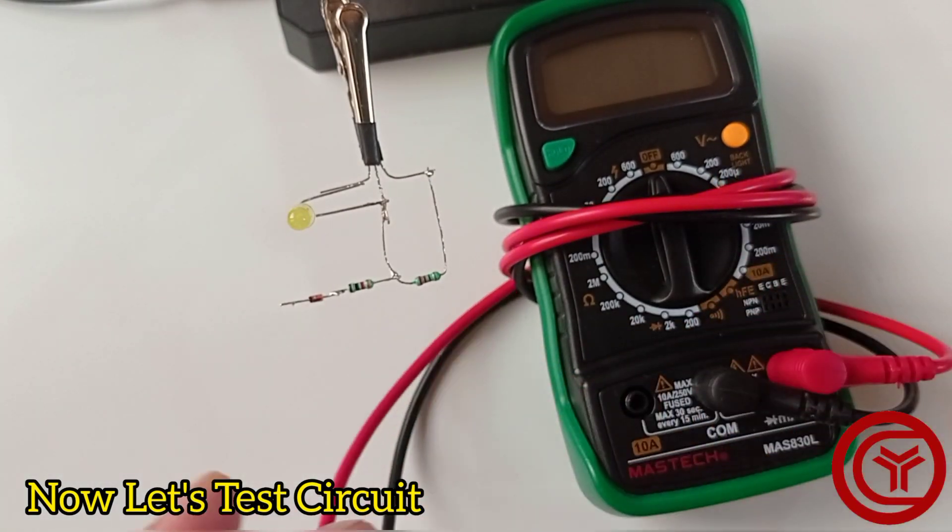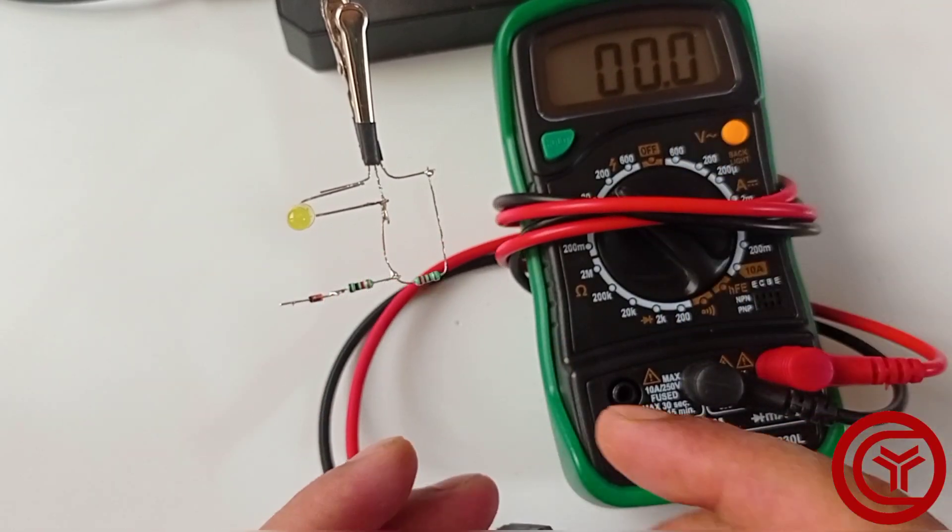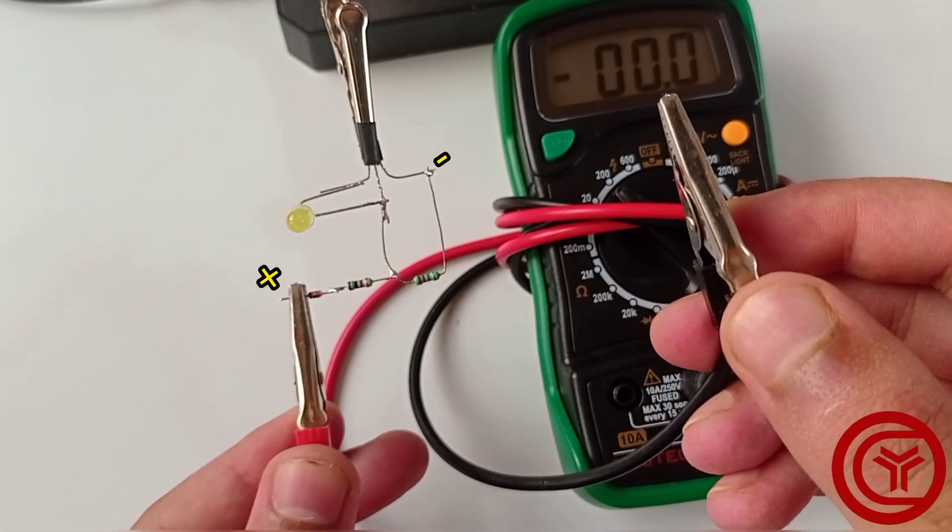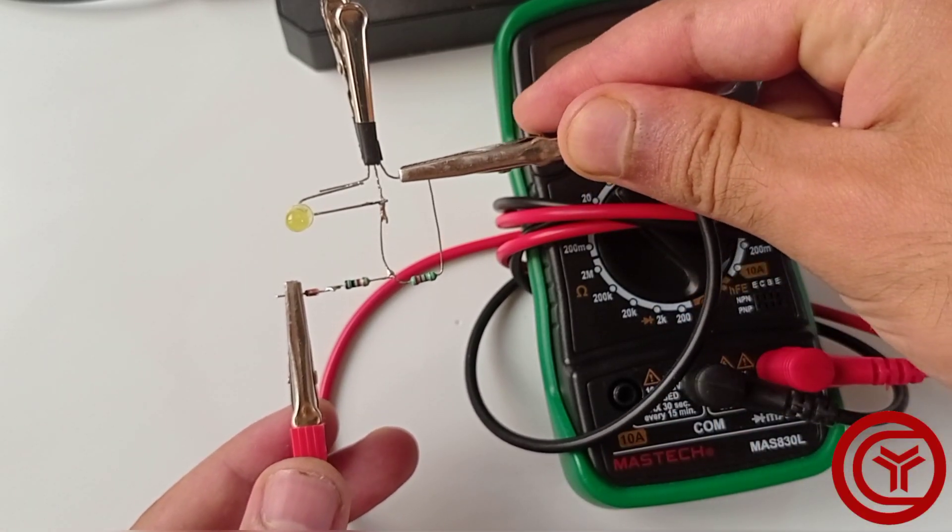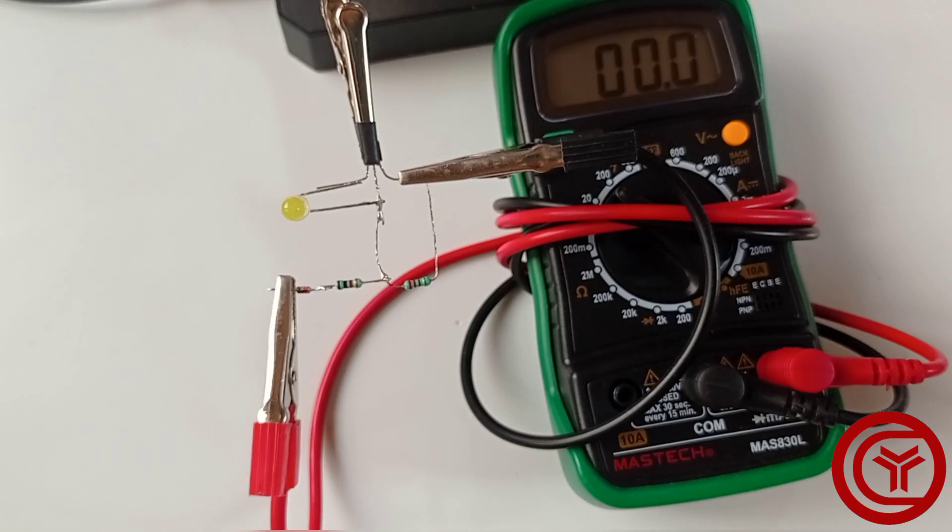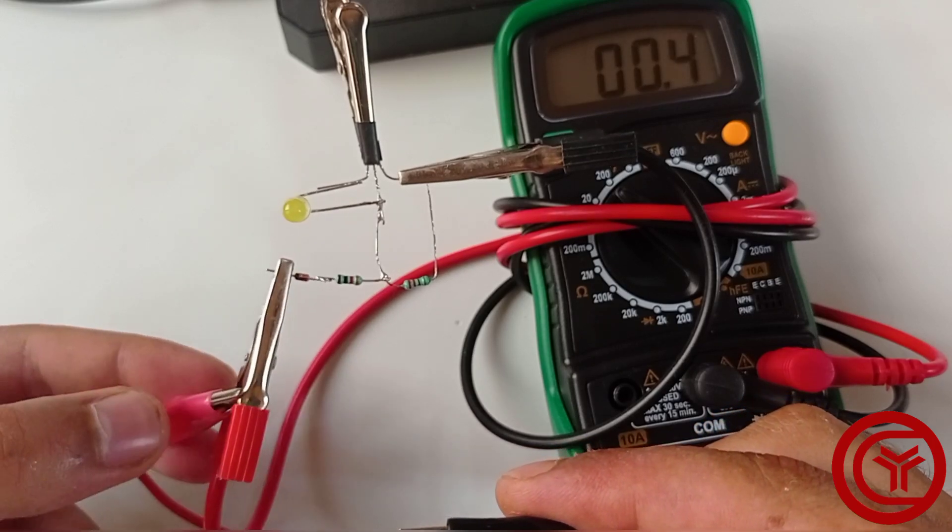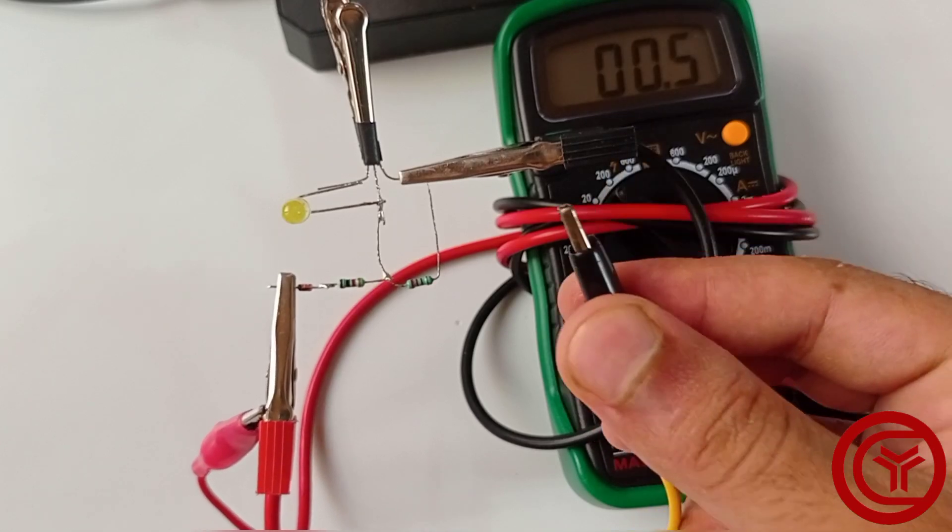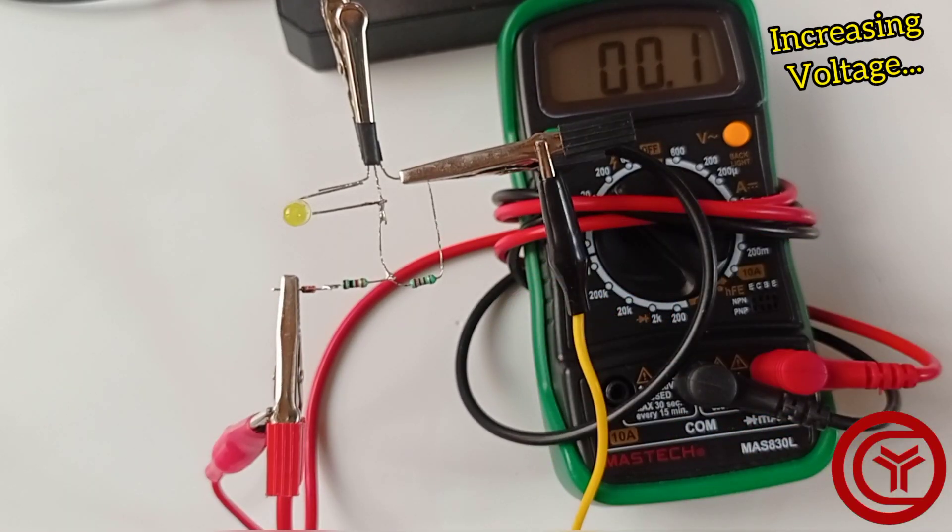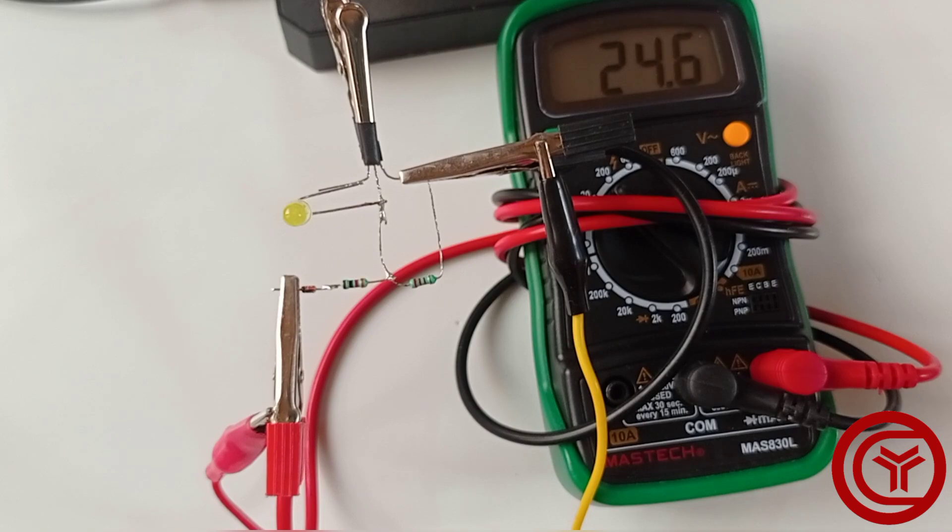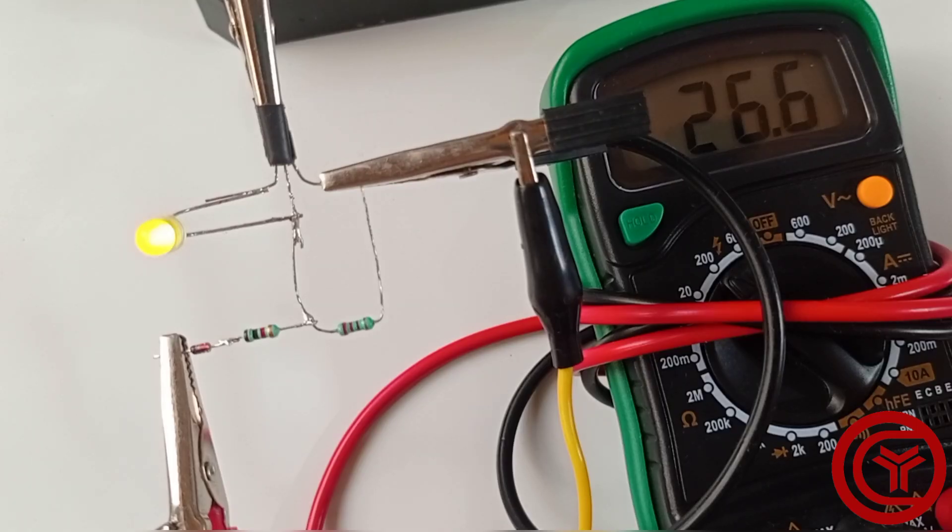Now let's test the circuit. I will connect multimeter to track the voltage. Also I will connect variable power supply to show the functioning of this circuit. Now I started increasing voltage slowly to 26.6V.